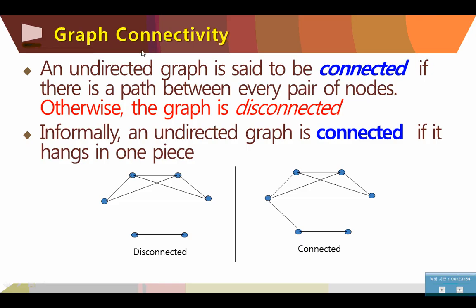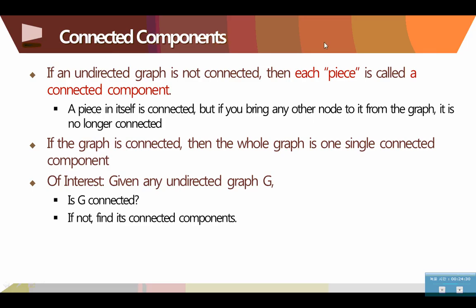Graph connectivity. An undirected graph is said to be connected if there is a path between every pair of nodes. Otherwise, the graph is disconnected. This is connected all from any vertices, you can go to any vertices by passing through the edges. But here, these two graphs are disconnected. There is no way that you can go from one subgraph to the other. So, this is an example of disconnected graph. This is the connected graph.